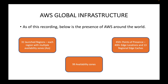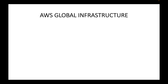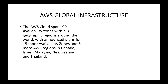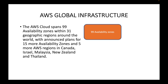This is basically the presence of AWS all around the world. The main thing to note is your regions — we have 31 regions. And within these regions, we have 99 availability zones. The AWS cloud spans 99 availability zones, and these 99 availability zones are under 31 regions. So we have regions, and within the regions, we have your availability zones.